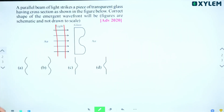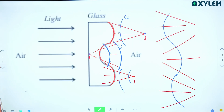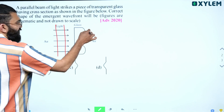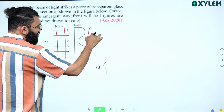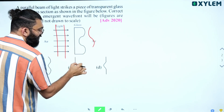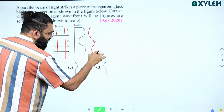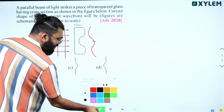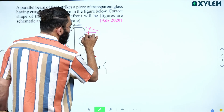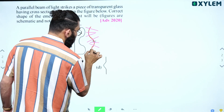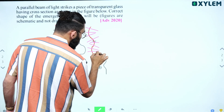Option A is the right answer. The shape of the emergent wavefront is like this at the top, like this at the midpoint, and like this at the lower part. The light ray converges in the upper and lower sections, and diverges in the middle section.